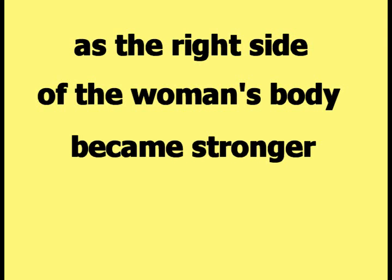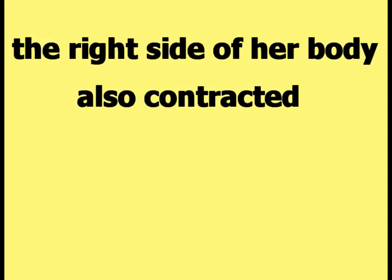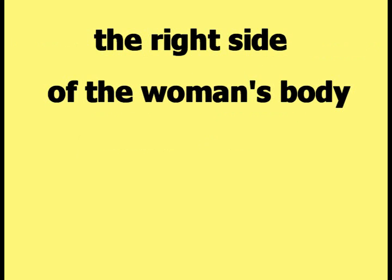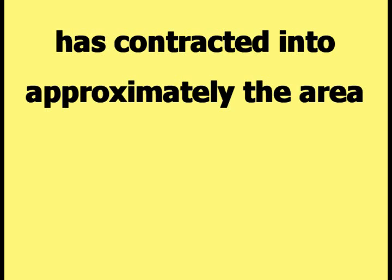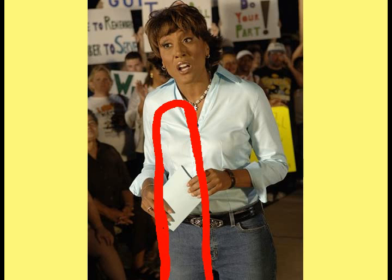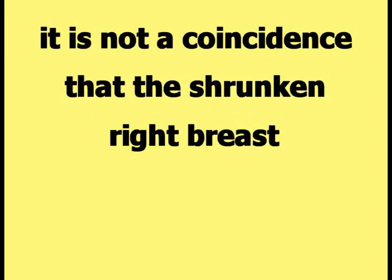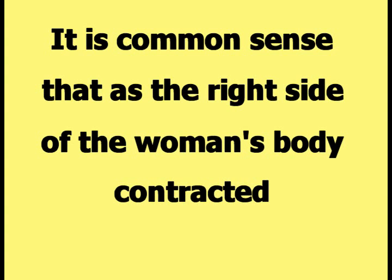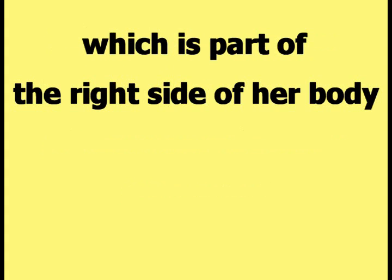According to Happy Theory, as the right side of the woman's body became stronger, the right side also contracted into approximately the area shown by the outline on this picture. It is not a coincidence that the shrunken right breast is within the boundaries of the contracted right side of the body. It is common sense that as the right side contracted, her right breast — which is part of the right side — would also contract.